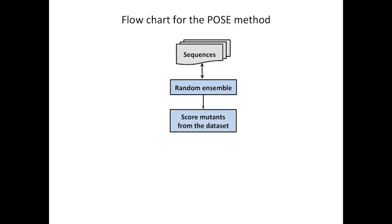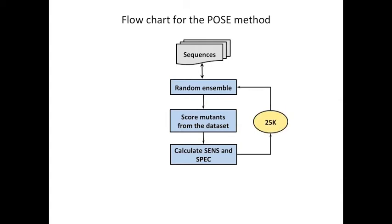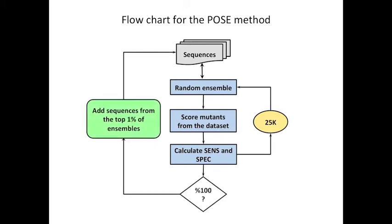Since we know the disease liability of the mutations we're scoring, we can calculate the predictive value of our predictions — in this case, we're calculating the sensitivity and specificity. We repeat this entire process 25,000 times. And here's the magic: every 100 times, we repopulate the initial sequence pool with the top 1% of ensembles based on their predictive value.